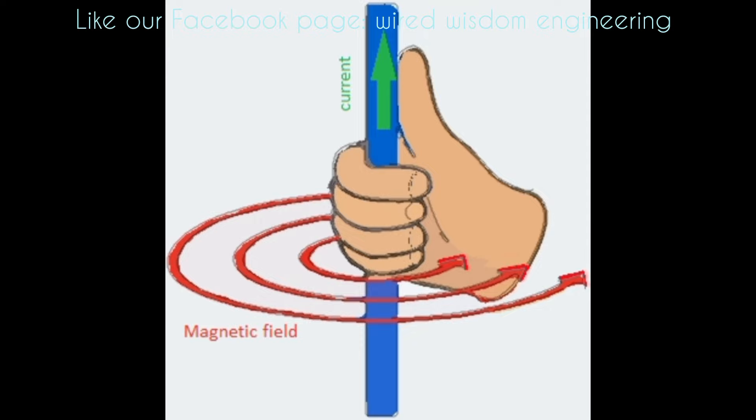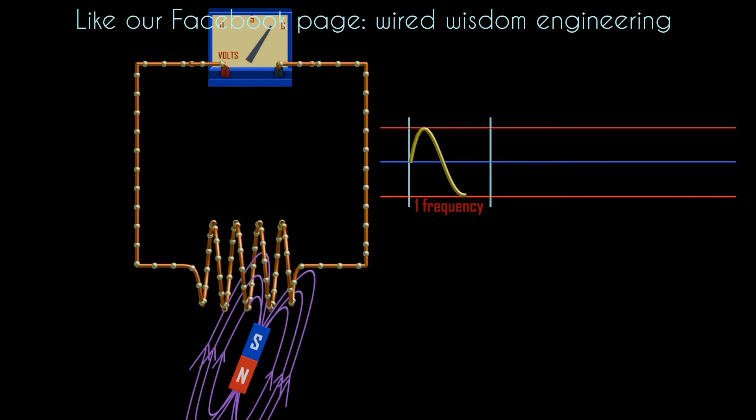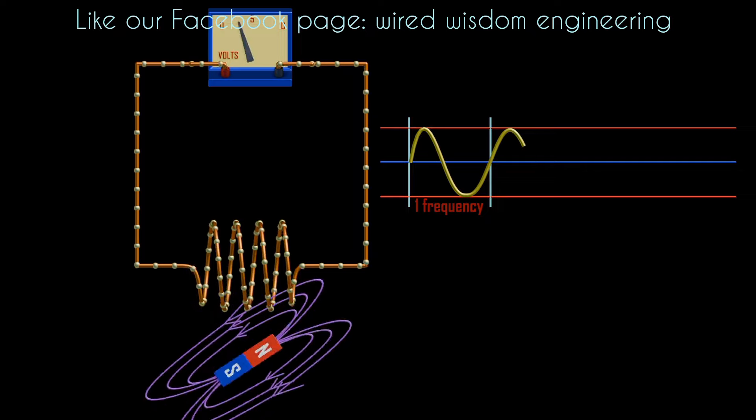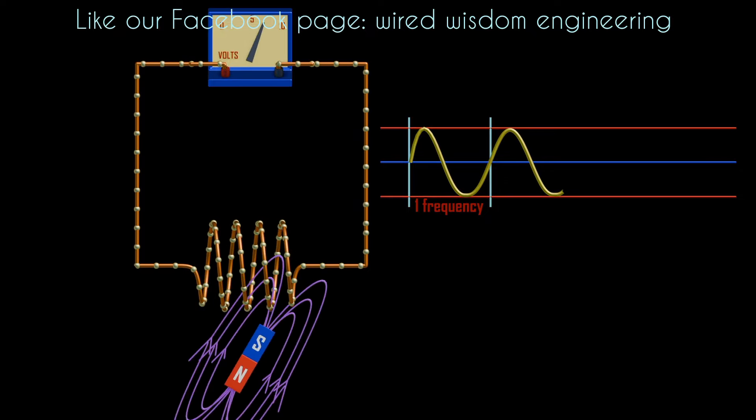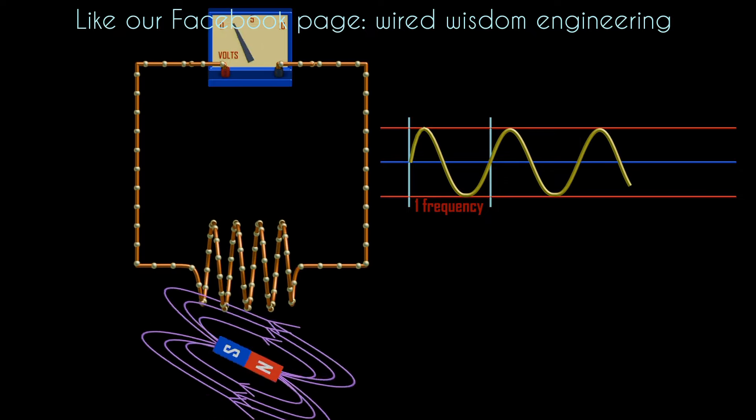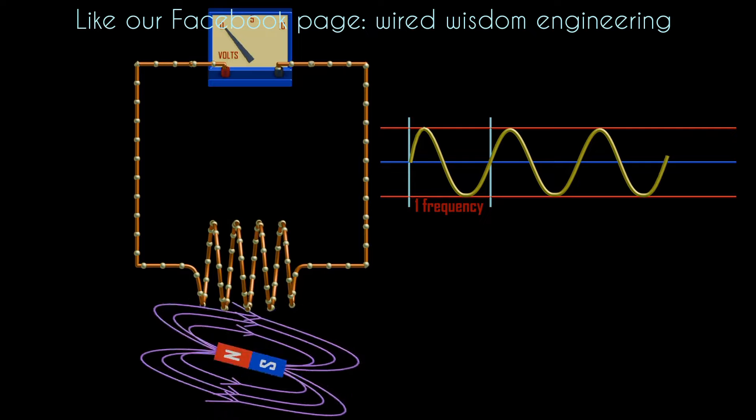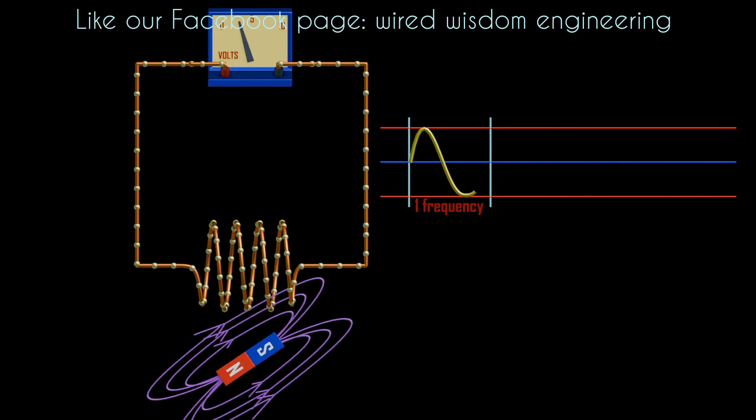Similarly, when a magnetic field cuts a conductor, these electrons will be able to flow which we describe as electric current. When we use a coil and a magnetic field cuts it, there will be induction of voltage, which is well described by Faraday's law.